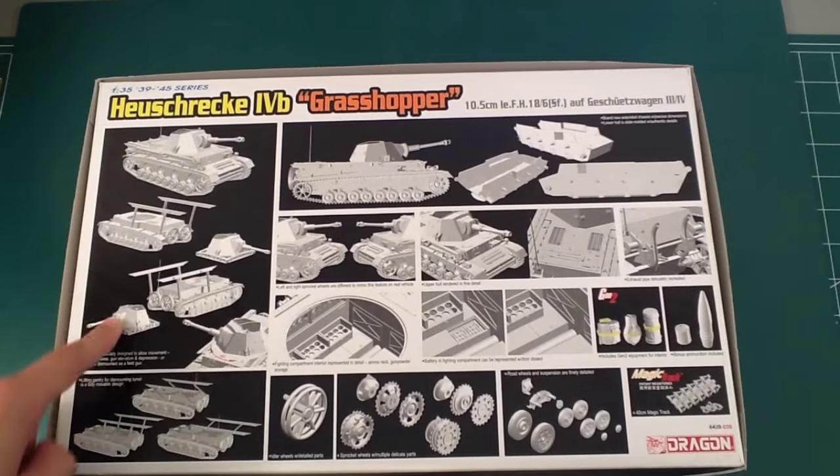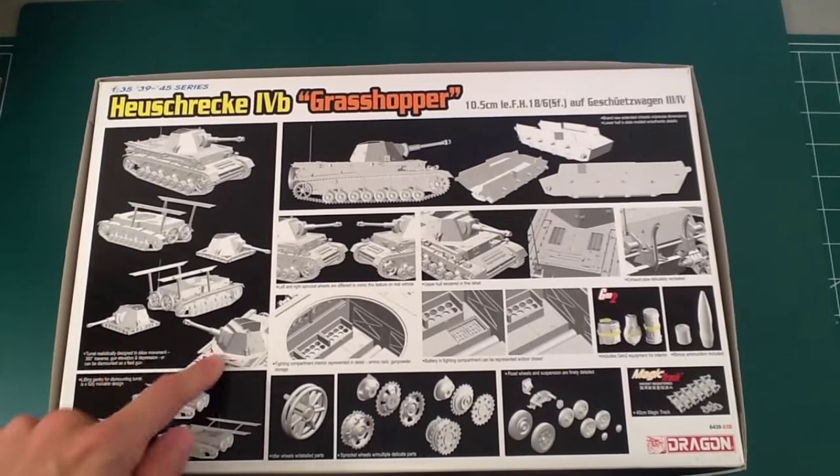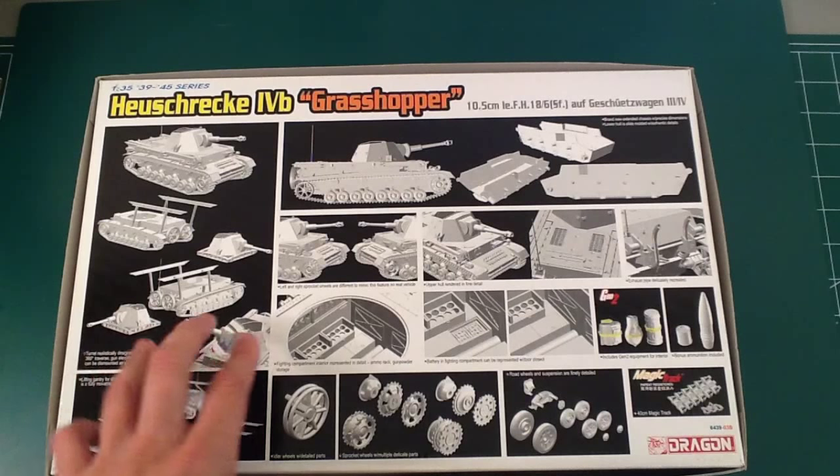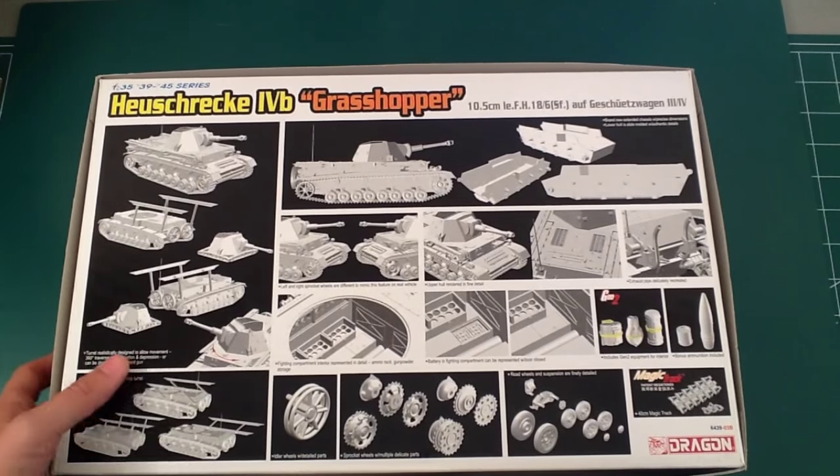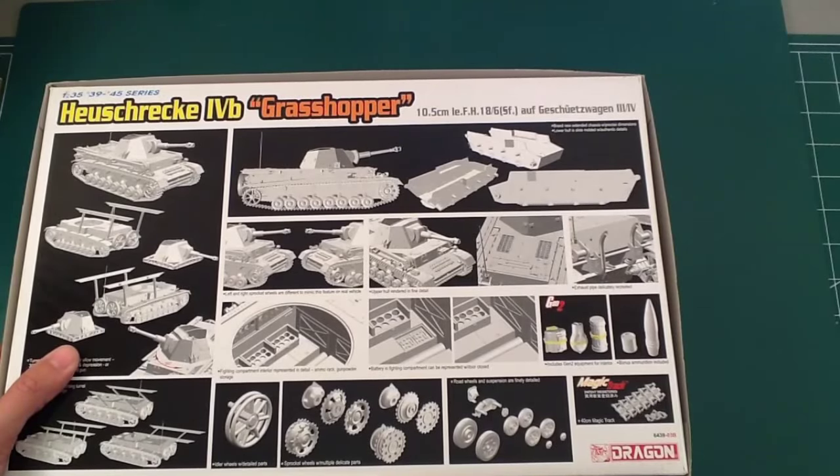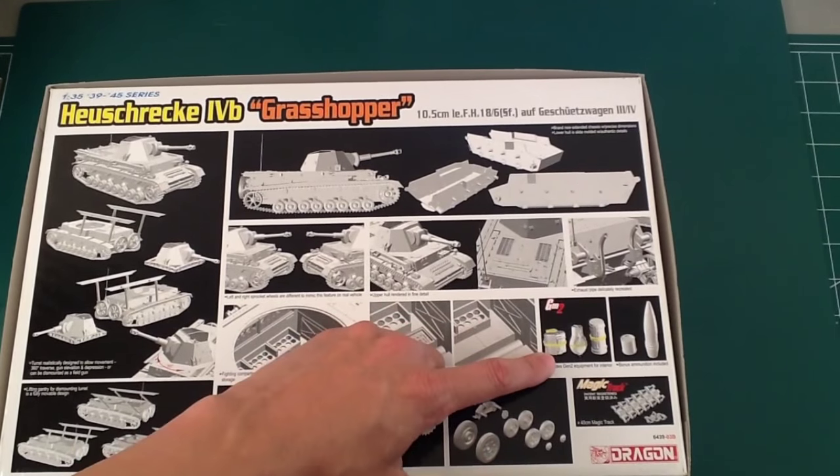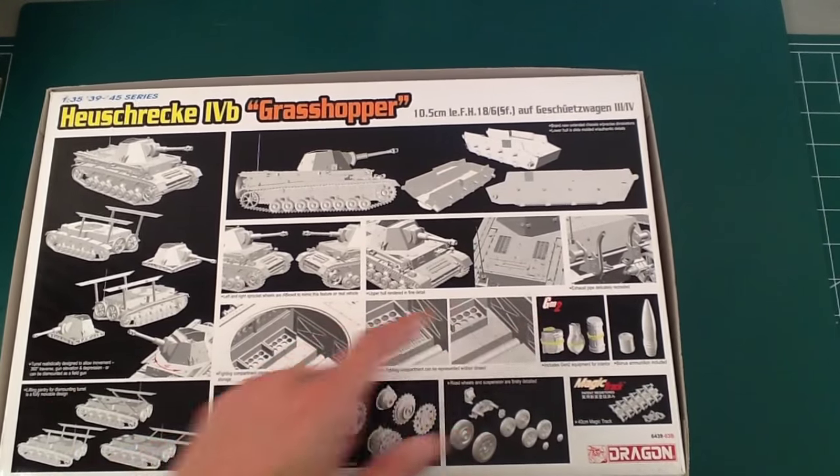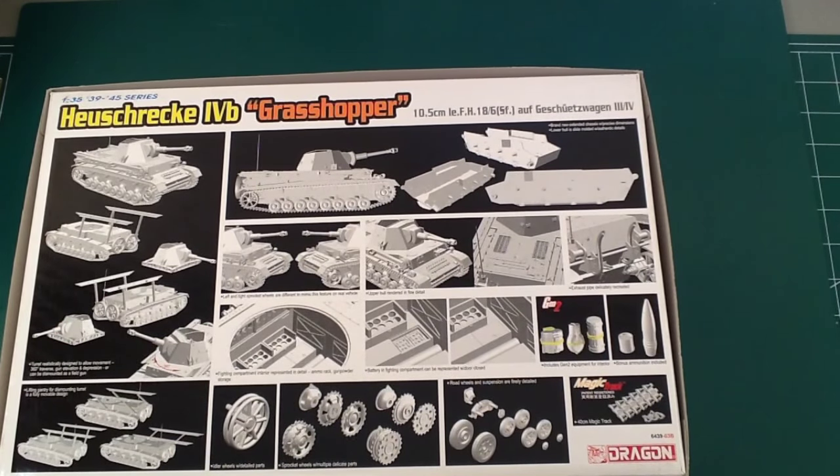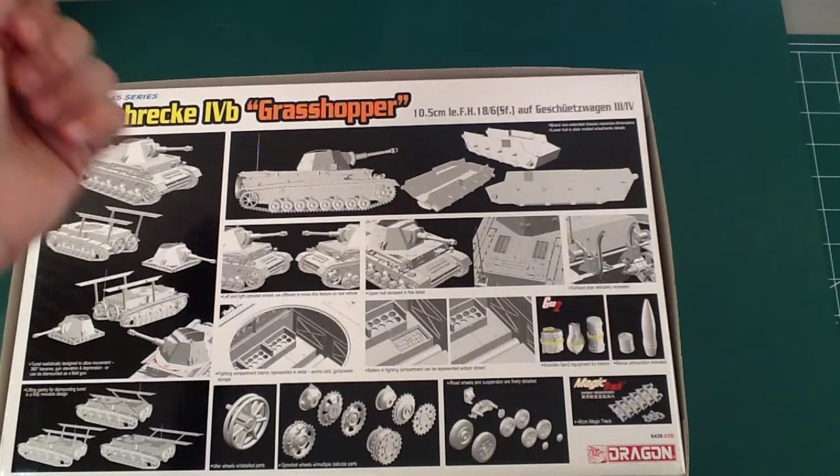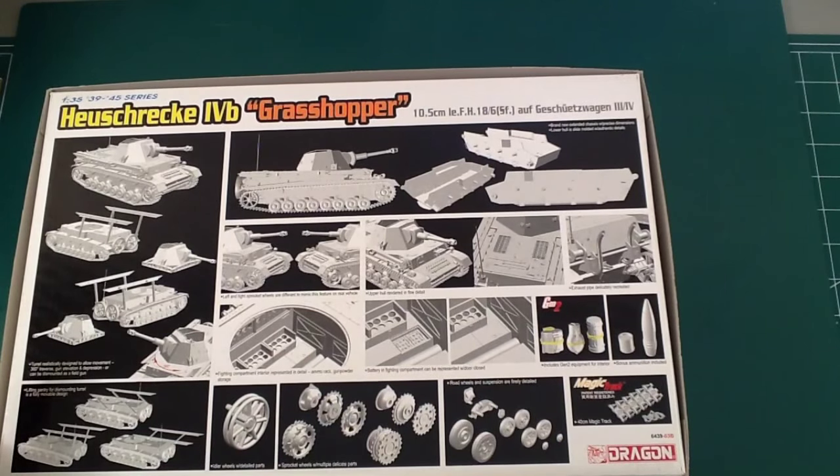That hull looks huge. So, there's some options for ways to do it. I mean, I can't even imagine having something that looks like this sitting on a shelf. It's so silly. It's got some Gen 2 stuff in there, I'm assuming, to go with the inside of the compartment. There's some interior stuff, which I don't usually see in Panzer IVs, and then Magic Track, thankfully.